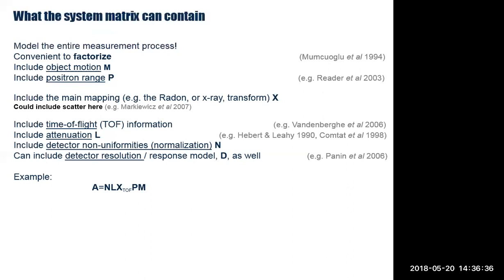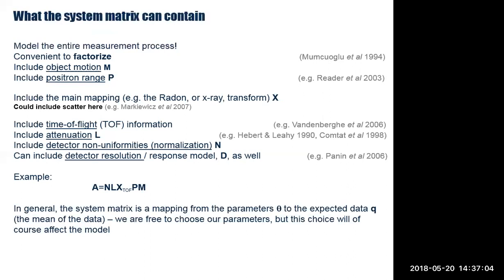You can include the detector response into the system matrix — you could generate it via a long Monte Carlo simulation with all detector peculiarities built in. In general, the system matrix is a mapping from the parameters representing the image to the mean data — a model of the mean of the Poisson-distributed data. We'll cover the Poisson log-likelihood and the reconstruction method in the next lecture. The system matrix is the mapping that takes us from theta to the model of the mean.